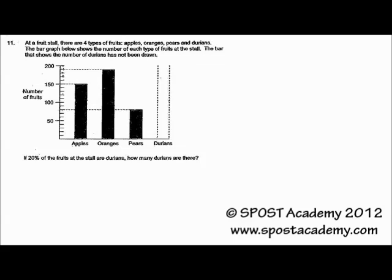At a fruit store, there are four types of fruits: apples, oranges, pears and durians. The bar graph below shows the number of each type of fruits at the store. The bar that shows the number of durians has not been drawn.